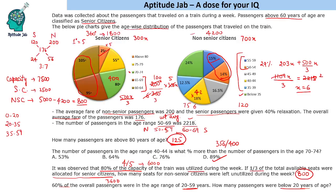Why bifurcate into three parts? We are given the total 20 to 59 as 3600. We can find 35 to 59 using the graph, and we know how many are below 35. We know how many are between 35 to 59 and between 20 to 59, so let us utilize all this information to get the result.